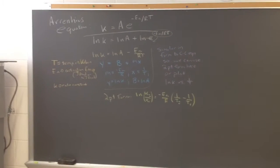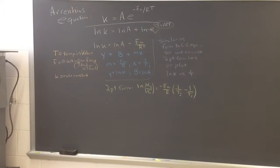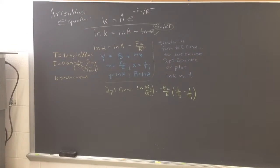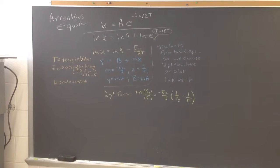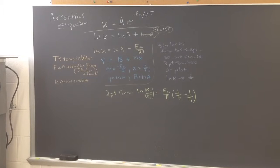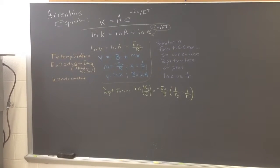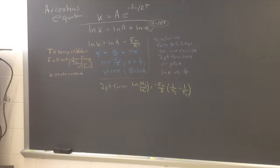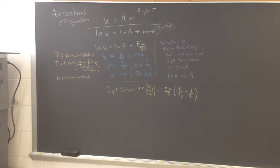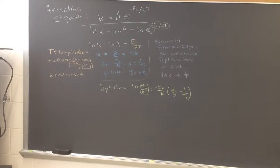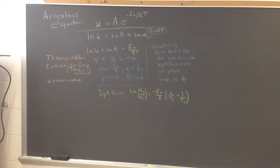So remember, we can take the natural log of both sides and we get the natural log of K equals natural log of A plus, if we take the natural log of an exponential, it pulls out. So if we see there on the yellow line, we've got now the natural log of K equals natural log of A minus E sub A over RT, which we can obviously reverse those things on the right side and have negative E sub A over RT plus the natural log of A.